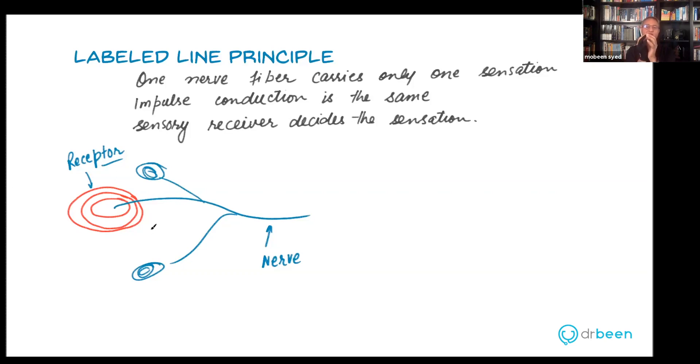Second: the nerve attached to the receptor can only carry that type of sensation. Remember, nerves actually don't carry sensations, nerves only carry action potentials. But one nerve cannot be attached to various categories of receptors.